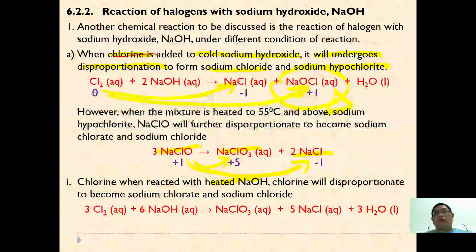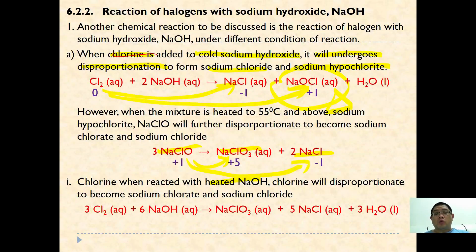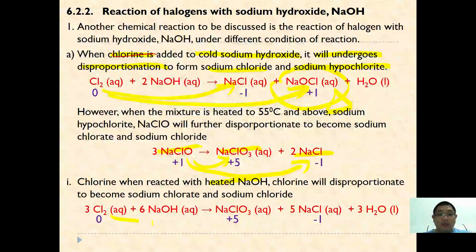When chlorine is reacted with heated sodium hydroxide directly, another type of reaction takes place: chlorine disproportionates to form NaClO₃ and 5 NaCl. Here, chlorine is oxidized and reduced simultaneously.